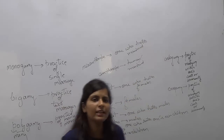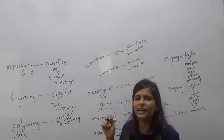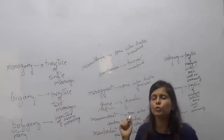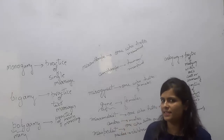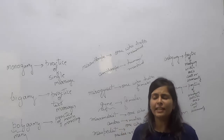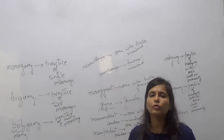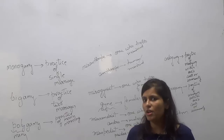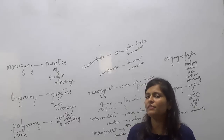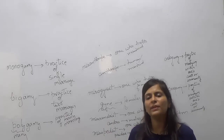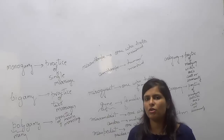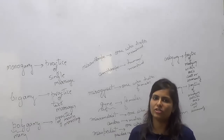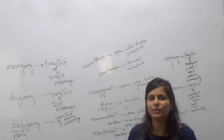So we have studied all the words that come from the root word 'mis'. We also studied the root word 'gamos', meaning marriage, and another root word 'theo', meaning God or religion. Thank you everyone.